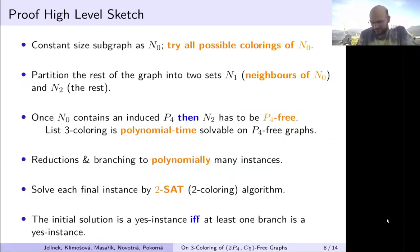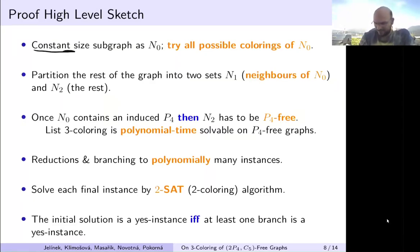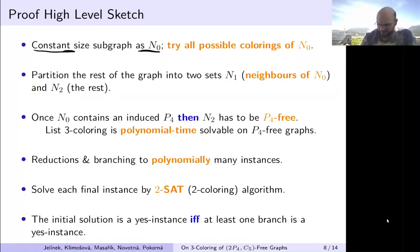I would like to show you at least a sketch of how our proof is done. We start with some small constant-size subgraph and set it as N0. For that we try all possible colorings on this N0, and because it is constant size, we can do it in constant time. Then we partition the rest of the graph: N1 are neighbors of N0, and N2 is the rest.